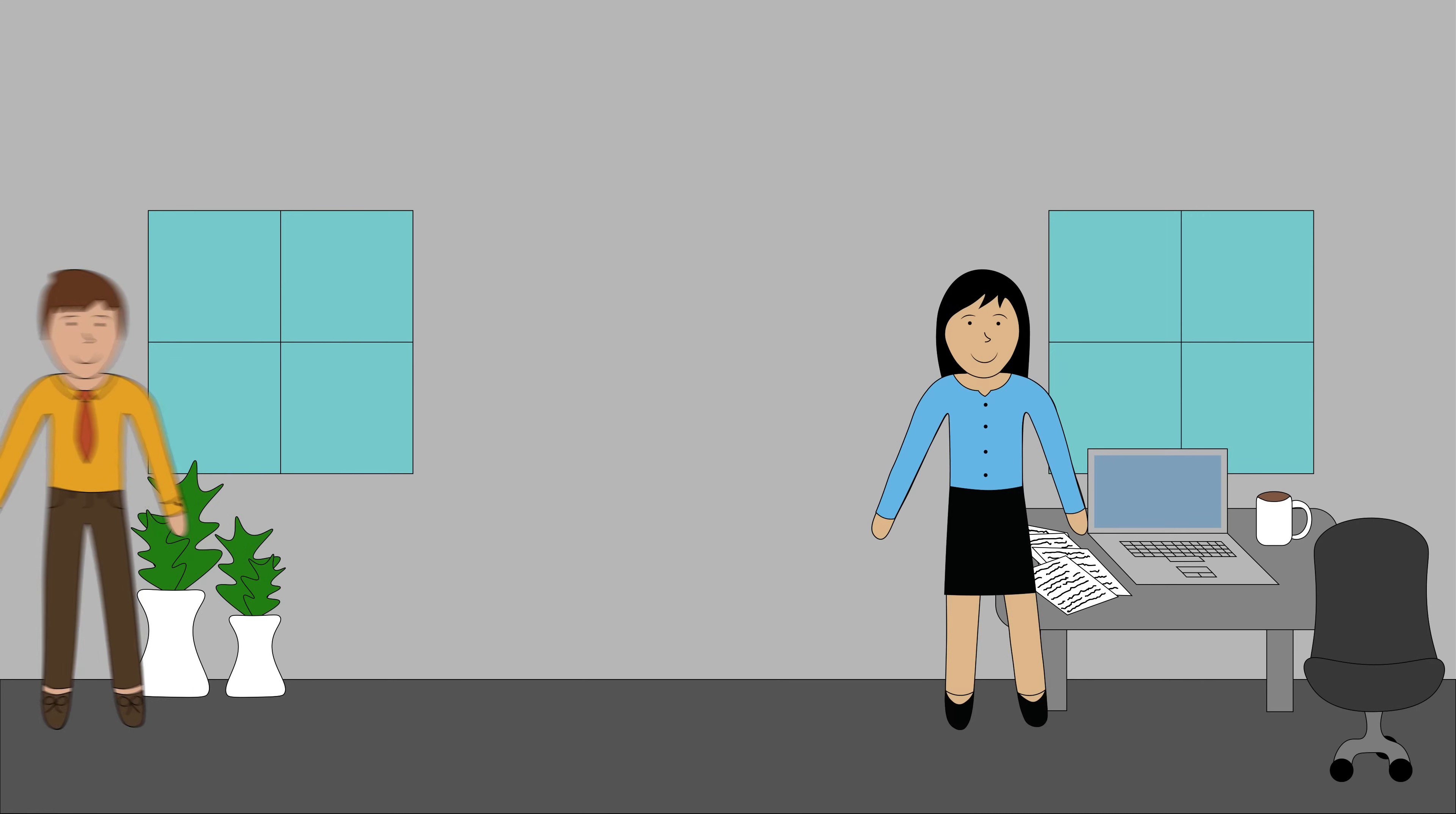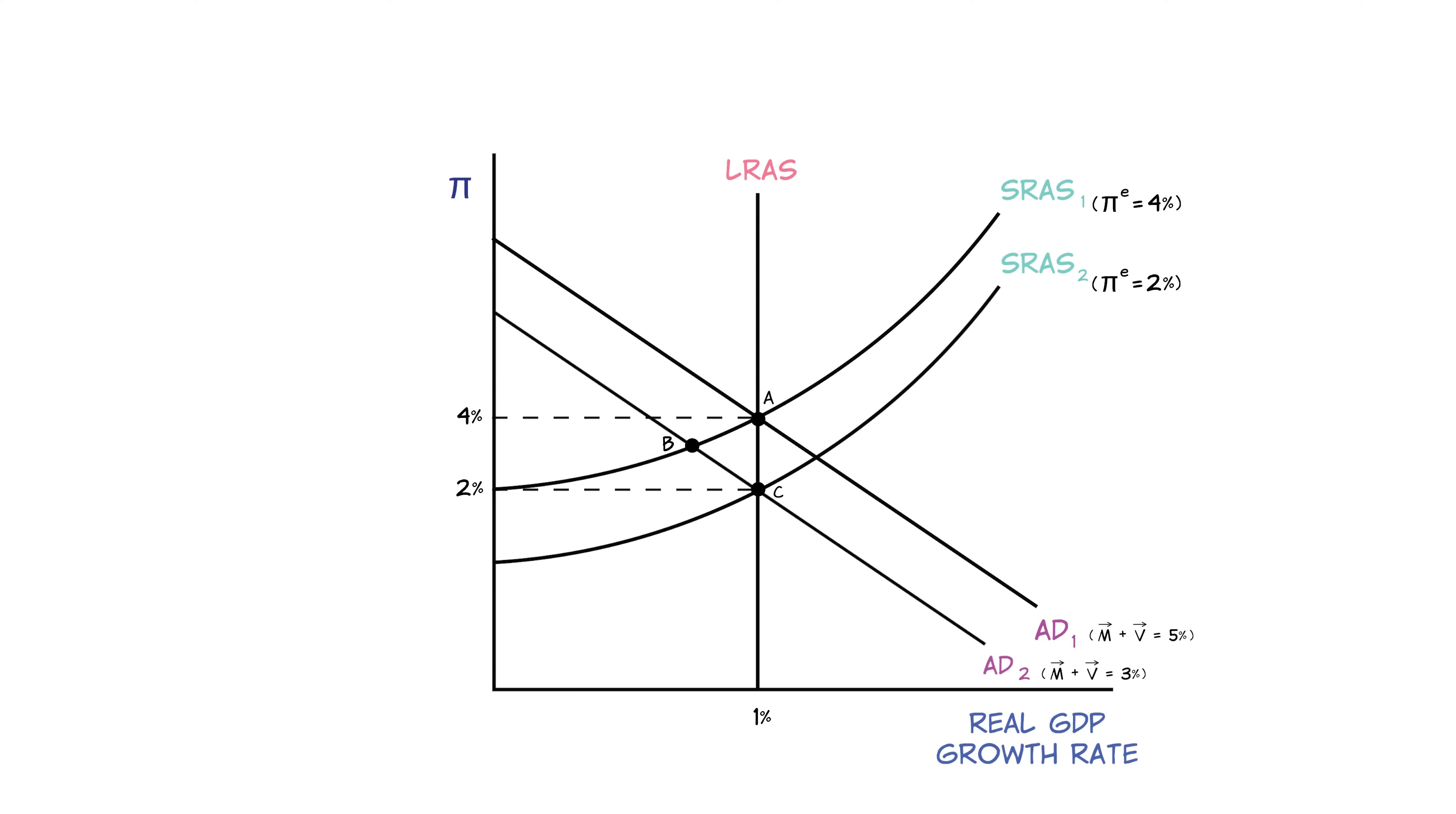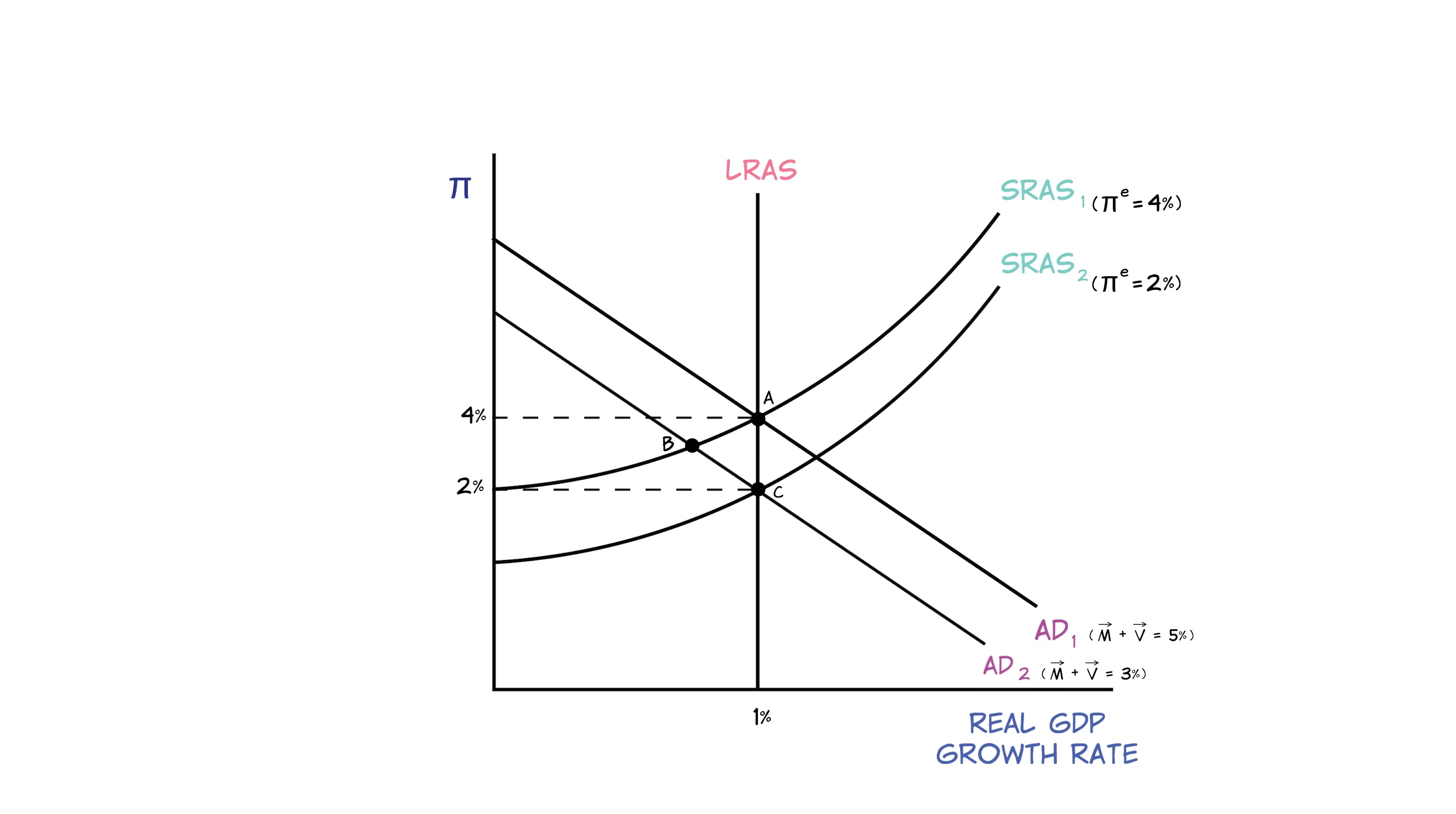Similarly, imagine that you told your boss that you thought the firm shouldn't raise prices this year because the growth rate of the money supply had fallen. Your boss might complain that she has to raise prices because her input prices are still increasing. In theory, if workers and firms all agree to lower wages and prices at once, kind of like we sometimes agree to change the clocks at the same time, we could move to point C quickly. But it's just not that easy to coordinate an entire economy in this way.